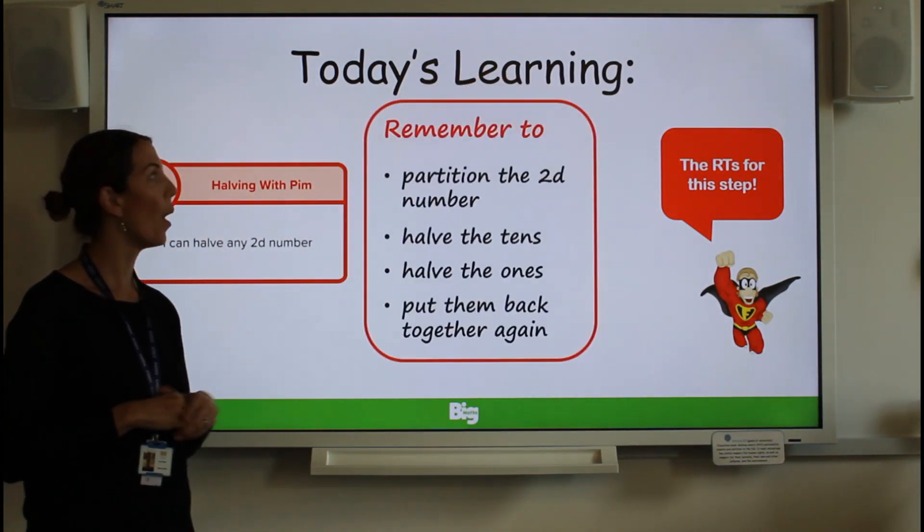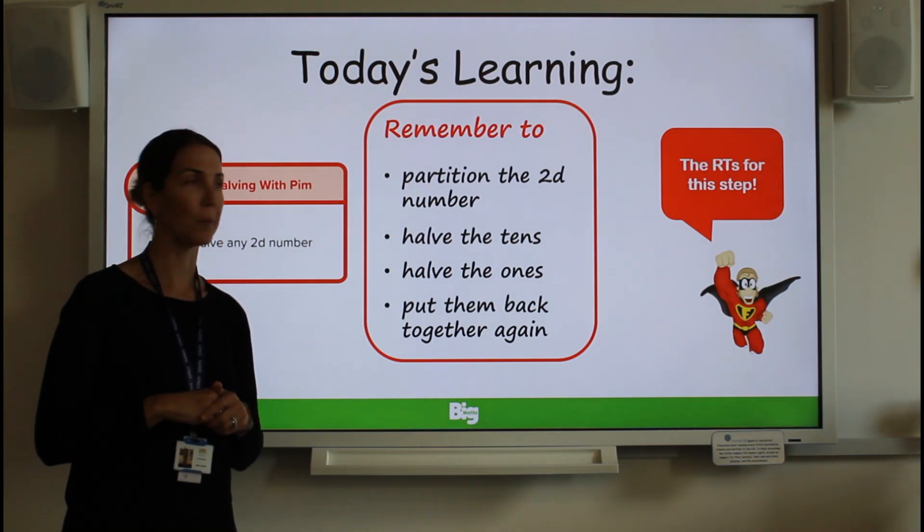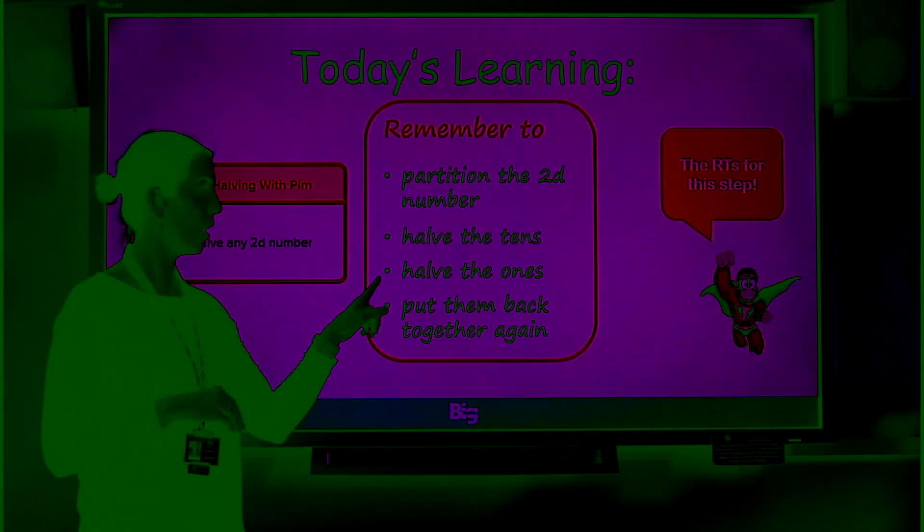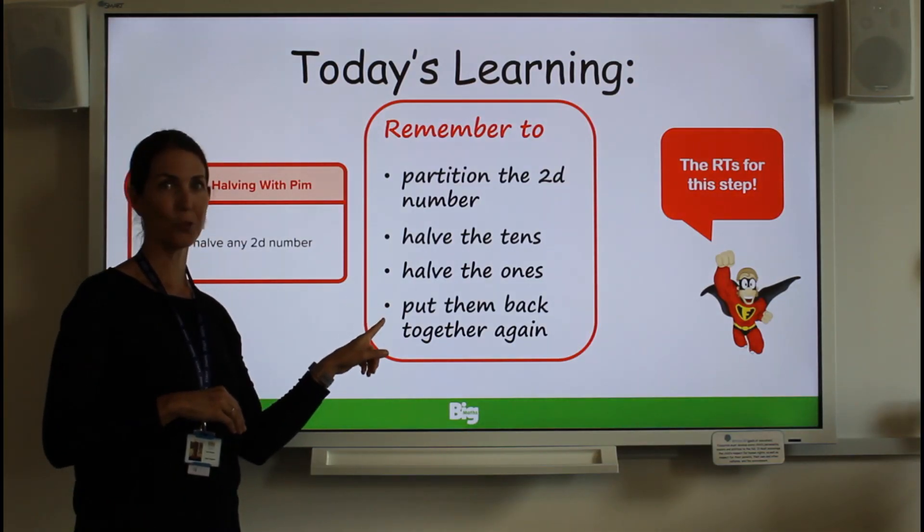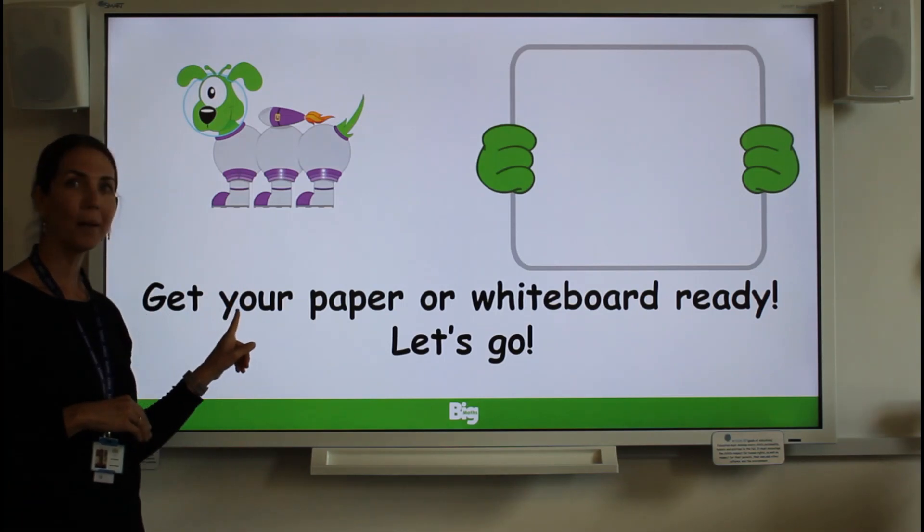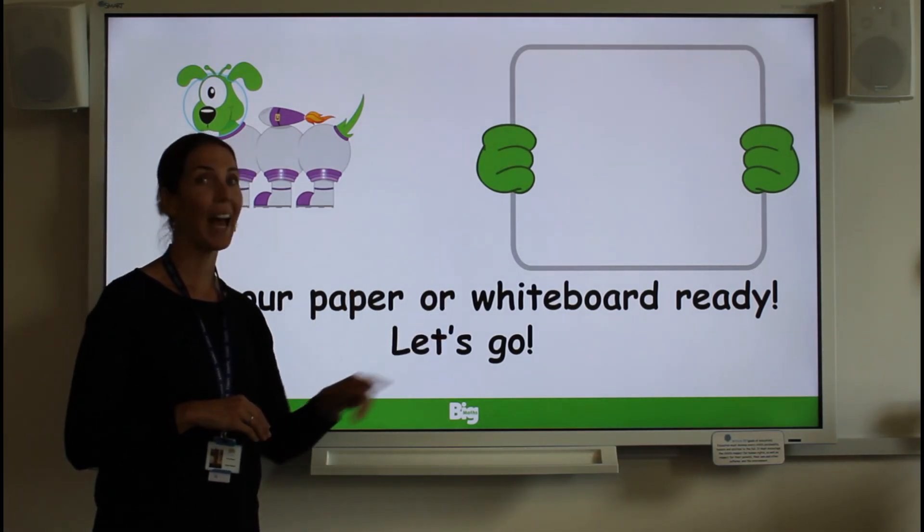Let's start with step one: partition the number. Step two: half the tens. Step three: half the ones. And then don't forget to put them back together again. Get your paper, get your whiteboard, and let's go.